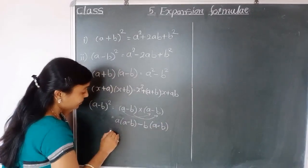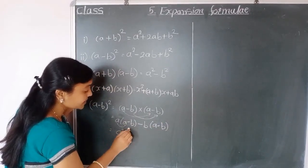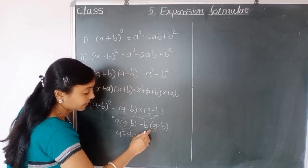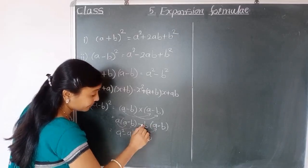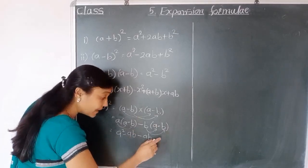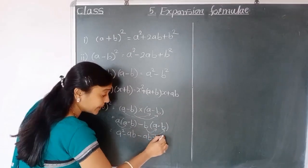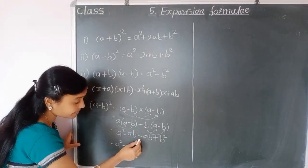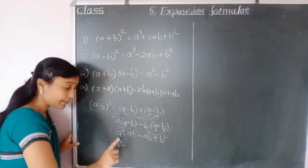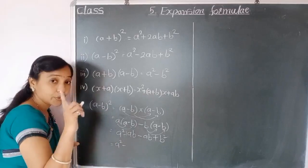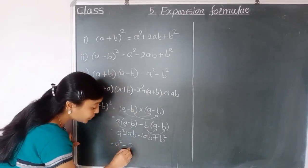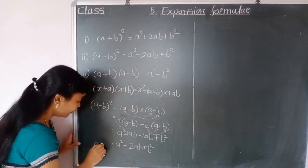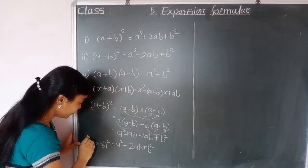Then: a into a gives a squared, minus a into b gives ab, minus b into a gives minus ab, minus b into minus b — minus times minus is plus — gives b squared. So we get a squared, and the ab terms: the coefficient is 1 plus 1 equals 2, giving minus 2ab plus b squared. So we get this expansion.